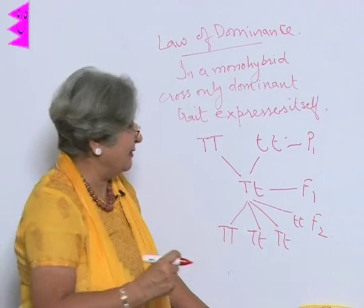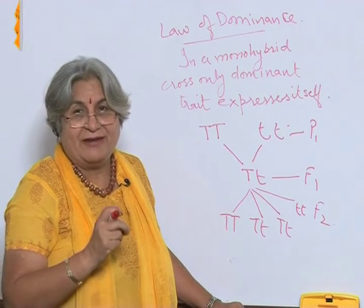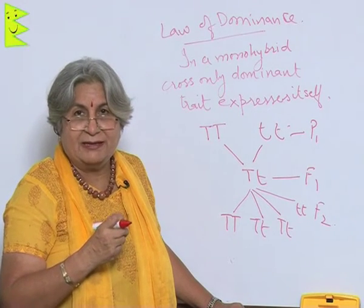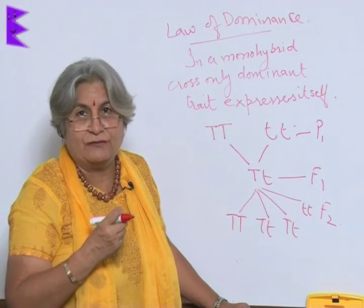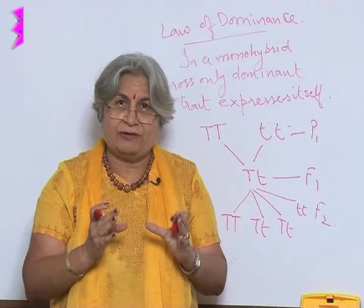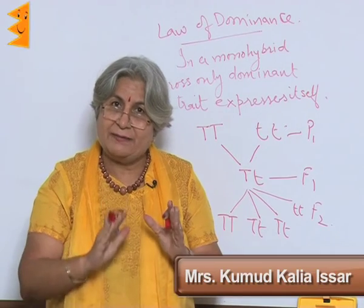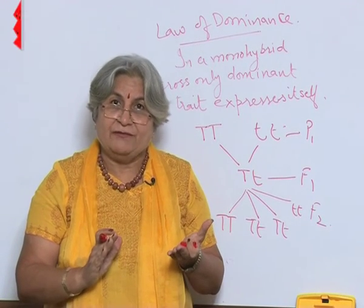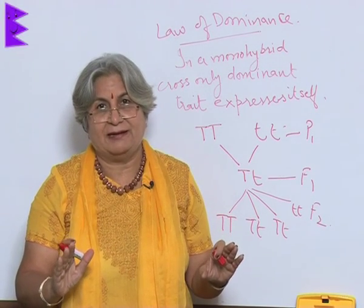That is the reason dwarfness appeared in the F2 generation. He said that when the hybrid tall plant was self-pollinated, it showed a phenotypic ratio of 3:1 and a genotypic ratio of 1:2:1. This means the two traits remain together in a hybrid, but one remains suppressed and the other is expressed. In the F2 generation, when the gametes are being formed, the traits separate from each other and are inherited separately.